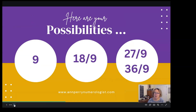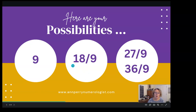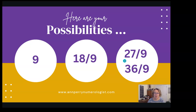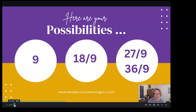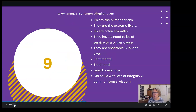Here are your possibilities on the nine life path number. Are you a straight-up nine — just a nine with no sub-lessons? Are you an 18/9, with one and eight sub-lessons to overcome? Are you a 27/9, where two and seven equal nine? Or are you a 36/9? These are very different people. Any way you calculate, you're coming up as a nine life path number.